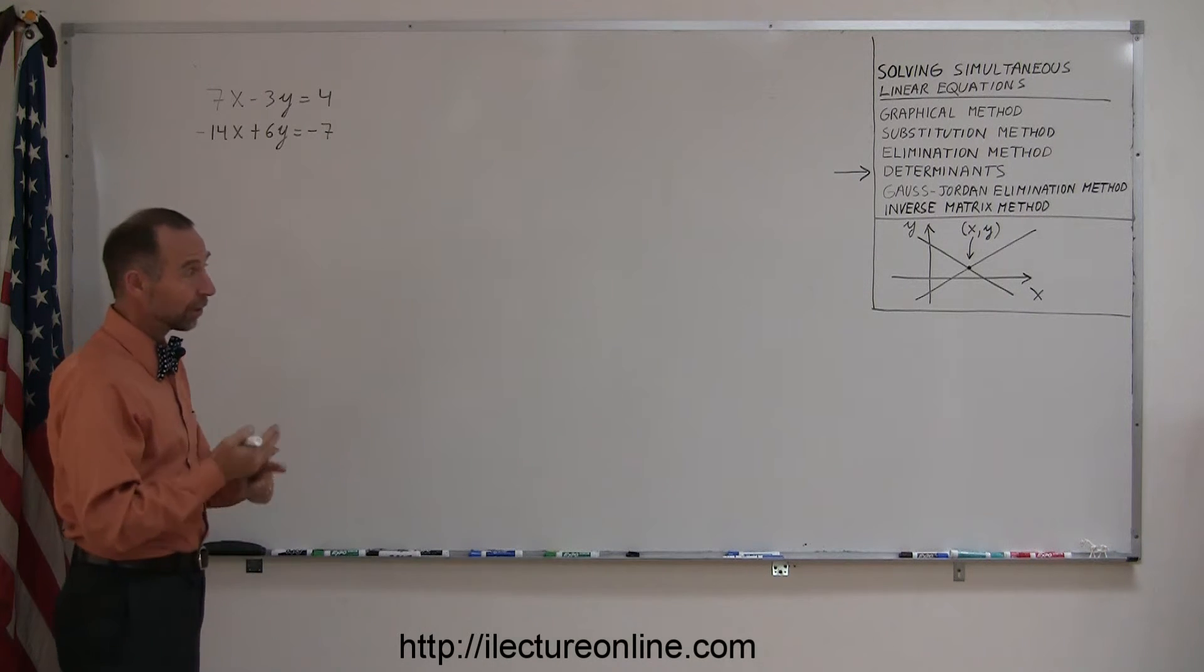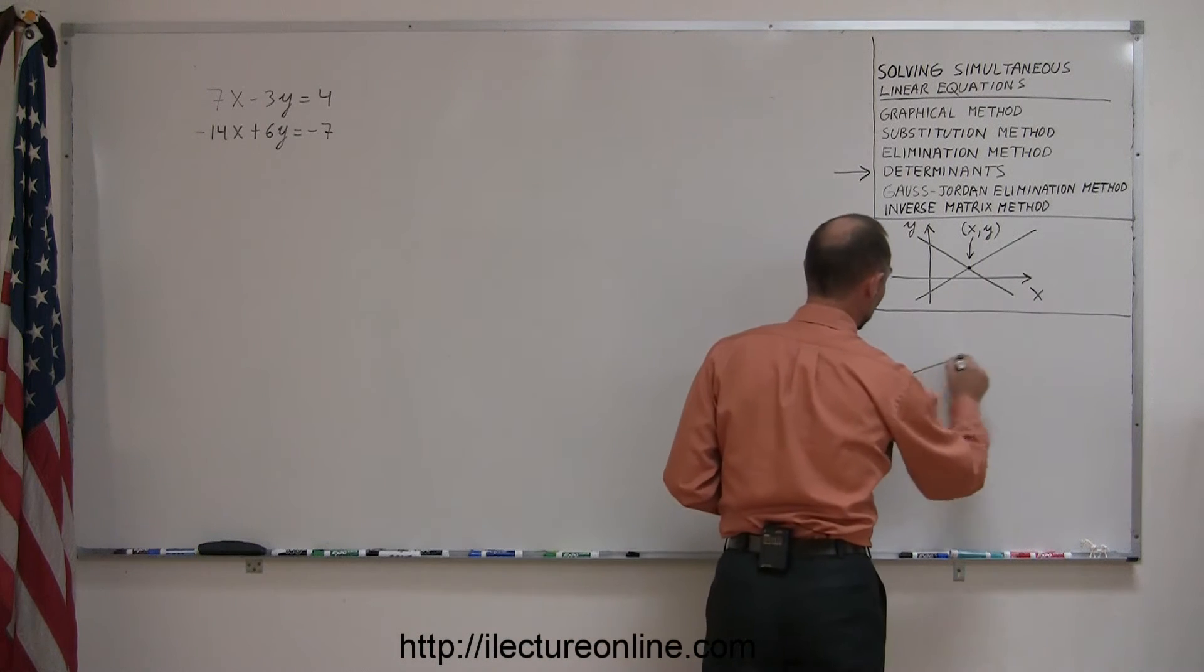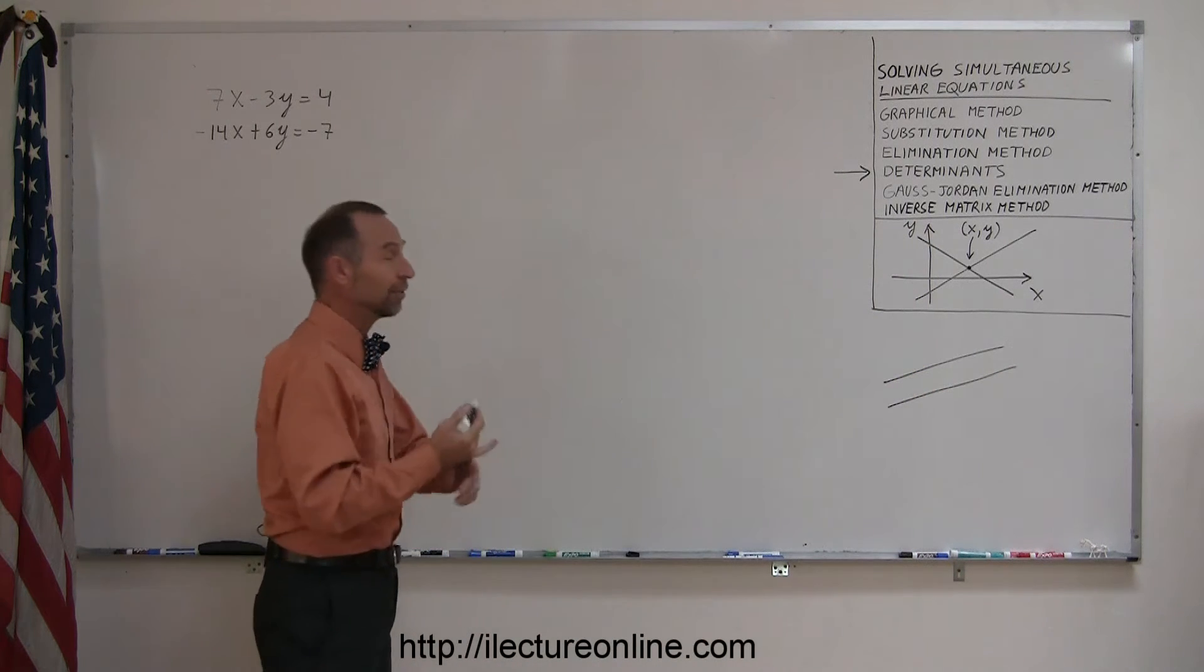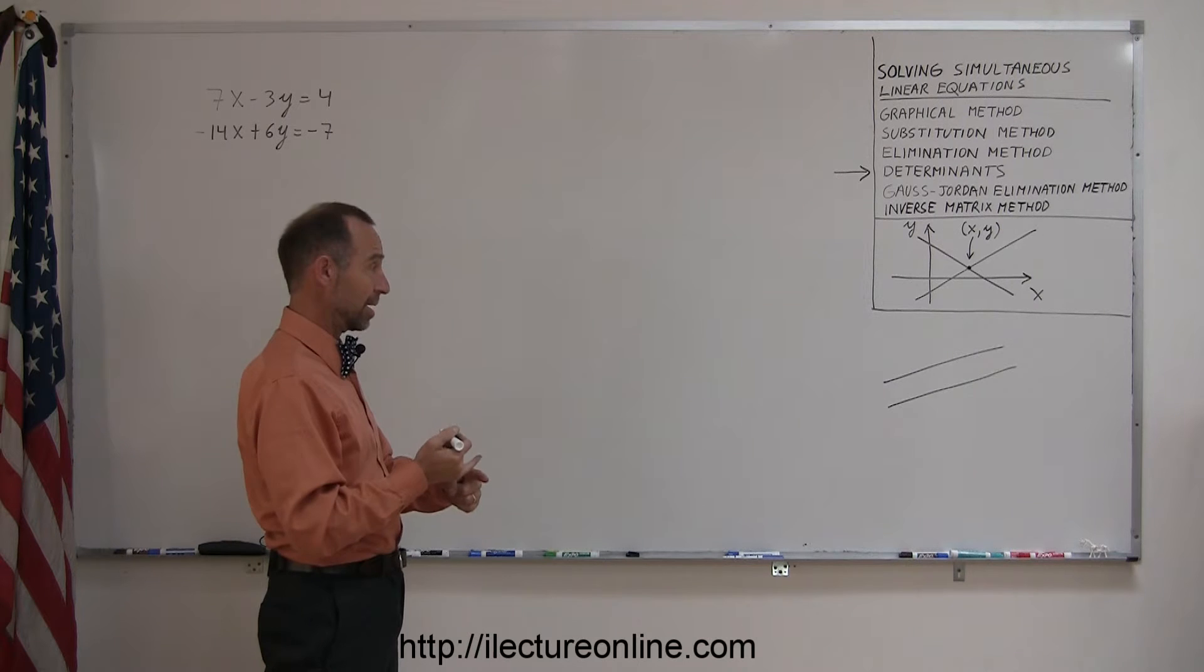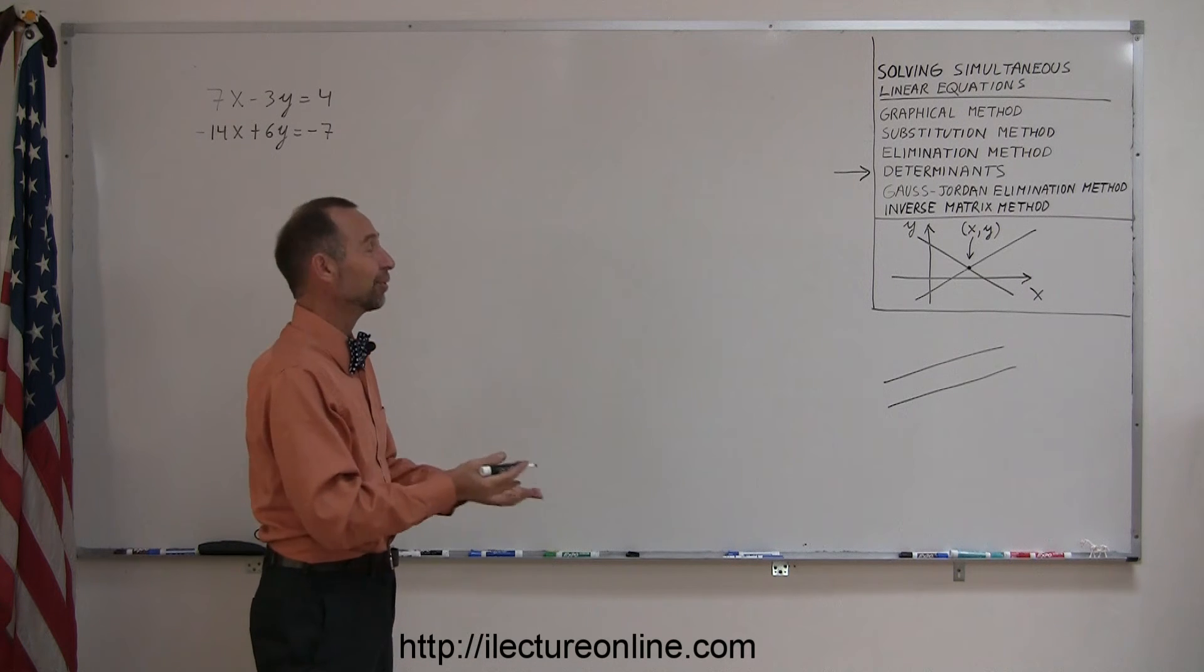Don't they always cross? Well, there are cases where the two lines don't cross. If the two lines are perfectly parallel to one another, they will never cross. And if they never cross, there's never a point where they cross, so there's no x or y value for that point.